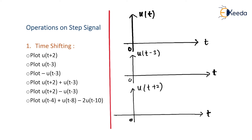Let us start with the first question and plot u(t+2). First, recall how u(t) works: u(t) is always 0 for t less than 0 and always 1 for t greater than 0. This is how u(t) looks — amplitude equal to 1 for t greater than 0, and 0 for t less than 0.